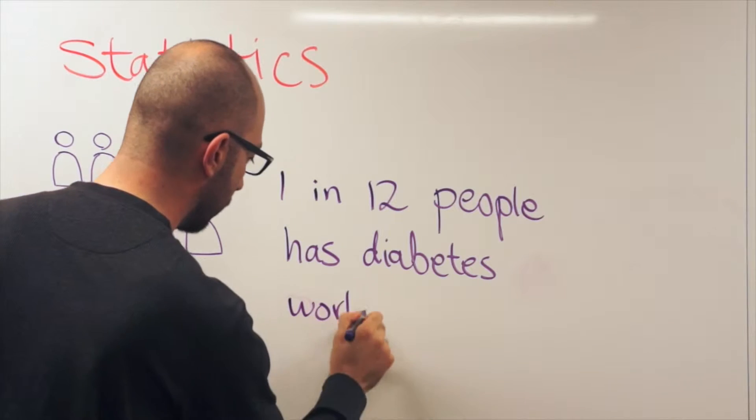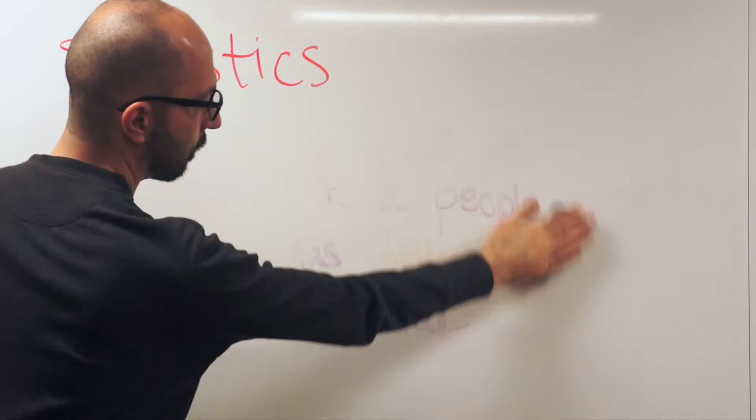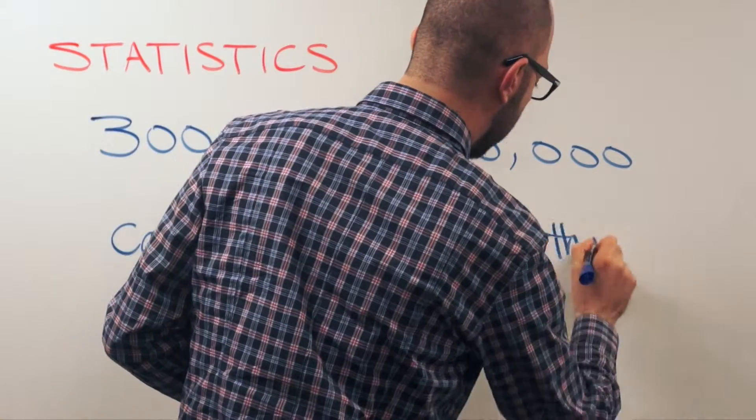One in twelve people suffer from diabetes, which adds up to over 350 million people worldwide. There are 300 to 600,000 cases of DVT each year in the US alone.